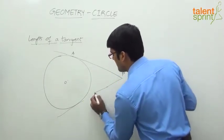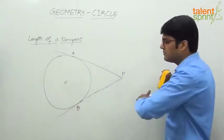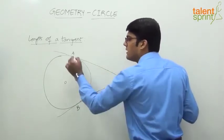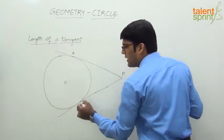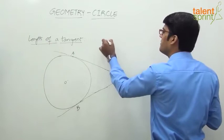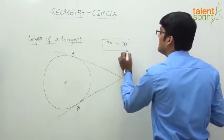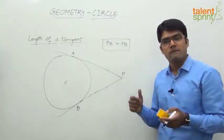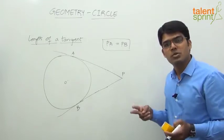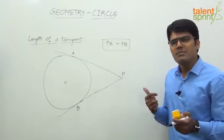The lower point of contact is B. So PA is one tangent and PB is the other tangent from point P. The tangent touches the circle only at one point — here at A, and here at B. The key point is that PA will be equal to PB. The two tangents drawn from one external point on a circle will be equal in length.